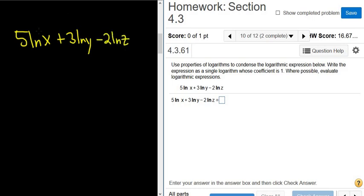Before we apply any of the rules, the product or quotient rule, we have to get rid of these numbers. These numbers here have to go back upstairs using the power rule. So we can write this as ln(x) to the 5th plus ln(y) cubed minus ln(z) squared.